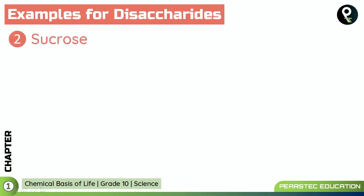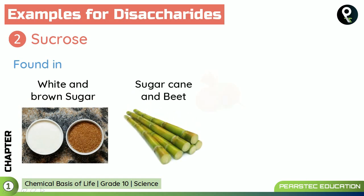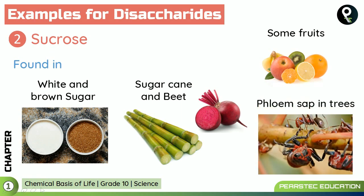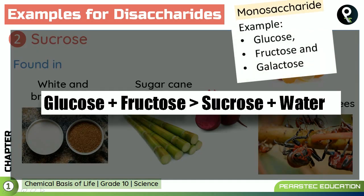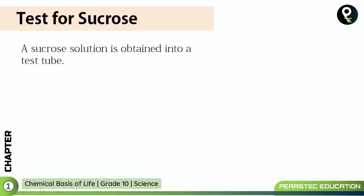Do you remember that we learned about sucrose? Sucrose is found in white and brown sugar, sugar cane, beet, some fruits, and also in phloem sap in trees. Sucrose is made when glucose joins together with fructose — it is definitely a disaccharide. Now we're going to do the sucrose test in the laboratory.